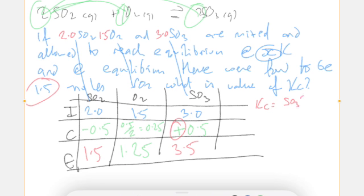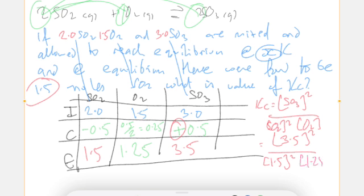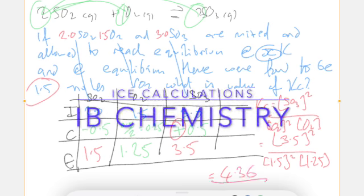Write out the Kc expression. Don't forget to square what needs squaring. Plug the numbers in that we have deduced from the given quantities in the question: 3.5 squared over 1.5 squared times 1.25 will give us an answer for Kc of 4.36. So it favors the right hand side. Hope you enjoyed that, have a great day.